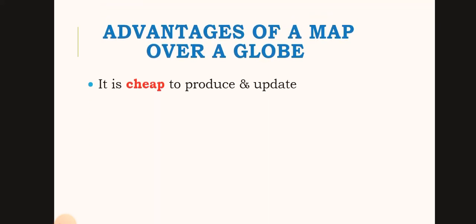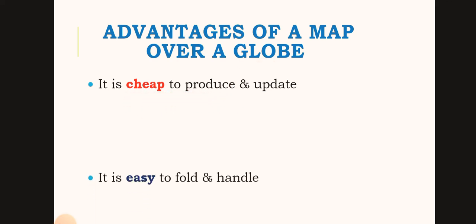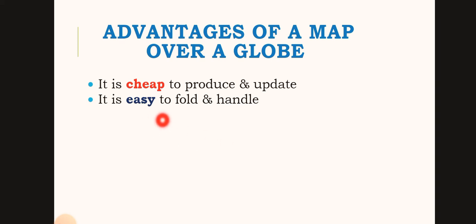The advantage of a map over a globe is that it is cheap to produce and update. A globe is expensive, whereas maps are cheap to produce and update.